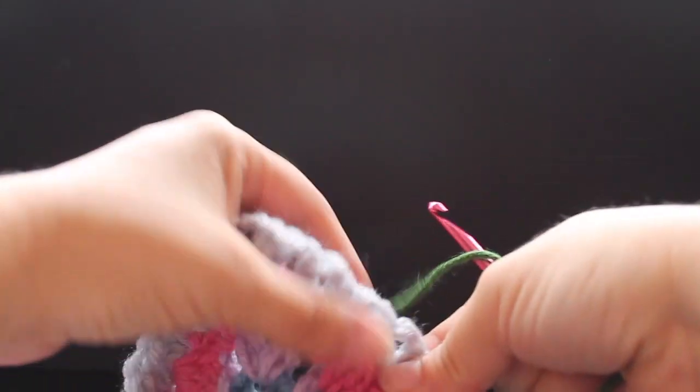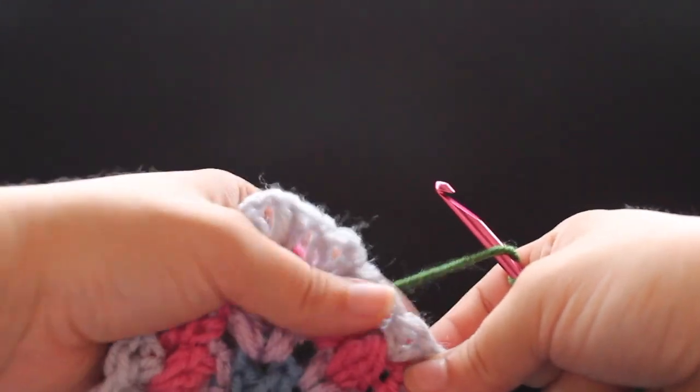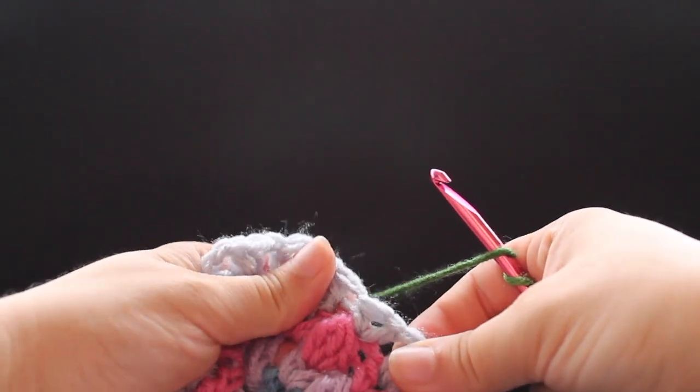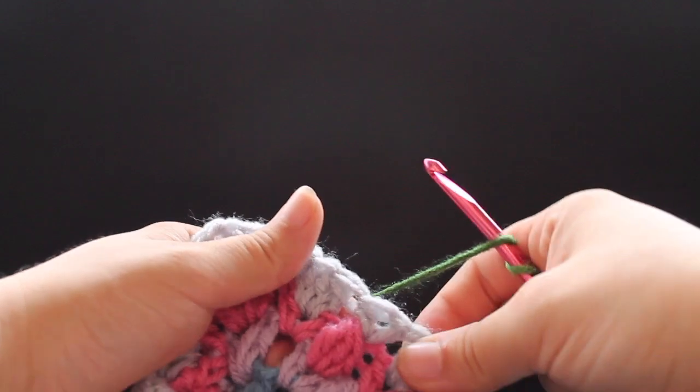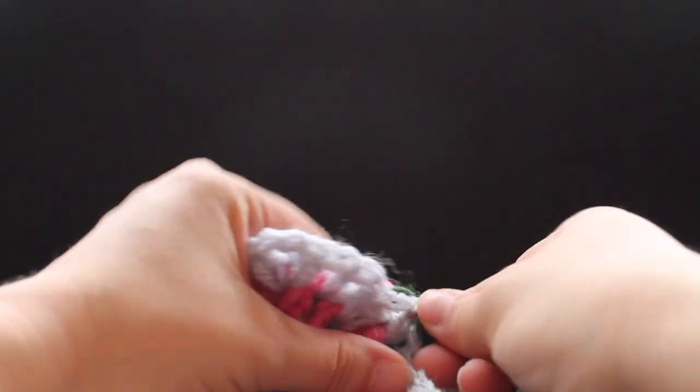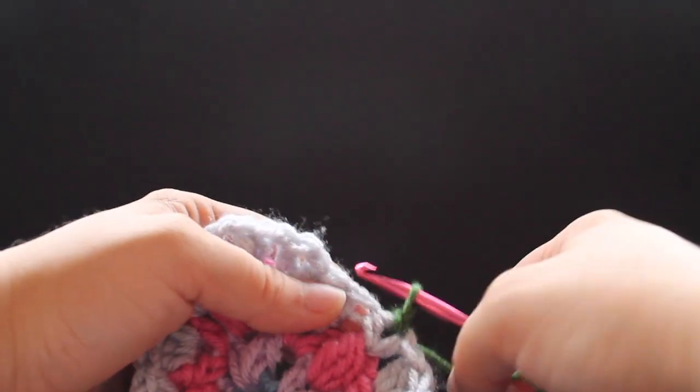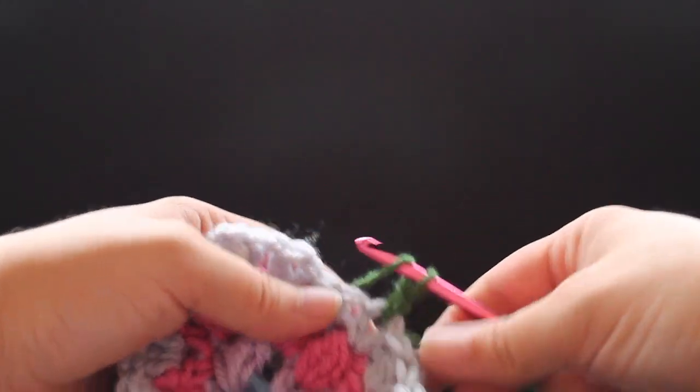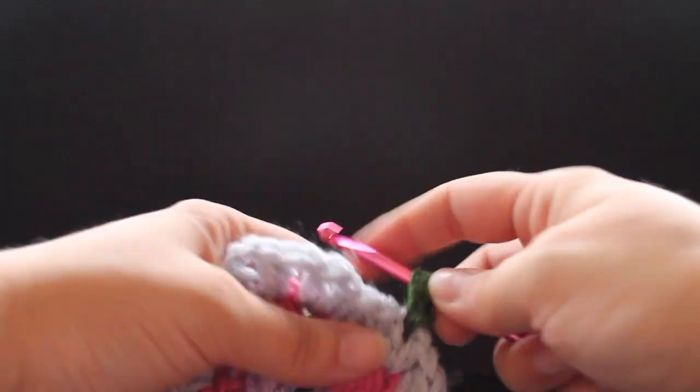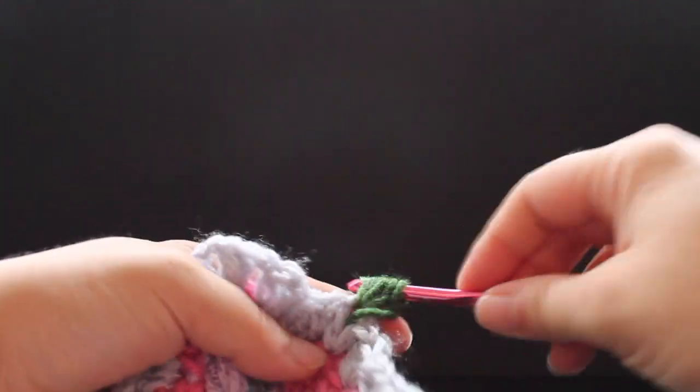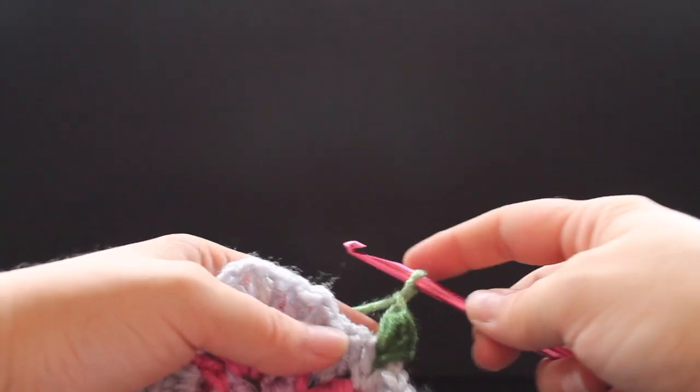I'm going to start in this one, the second one away from my corner, and we want to work a small puff v-stitch. Now for our first one, I have to draw up my green tones, chain one, and now I can start my small puff v-stitch. So small puff, chain one, and then small puff in that same chain one space.